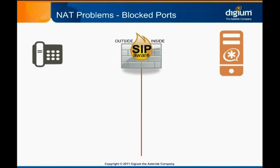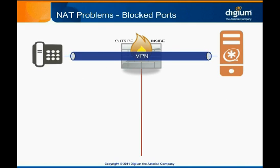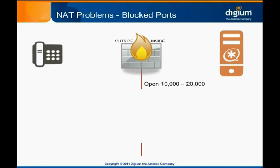You can also consider using a STUN server, which is a public server that helps a host behind a NAT figure out its own apparent public IP address, so it can tell the peer how to reach it. Another alternative is to have the phone and Asterisk on the same VPN, so that there is no NAT between them. Finally, you can consider configuring your firewall so that there is a wide range of open ports for RTP to use, but of course this approach is very insecure.